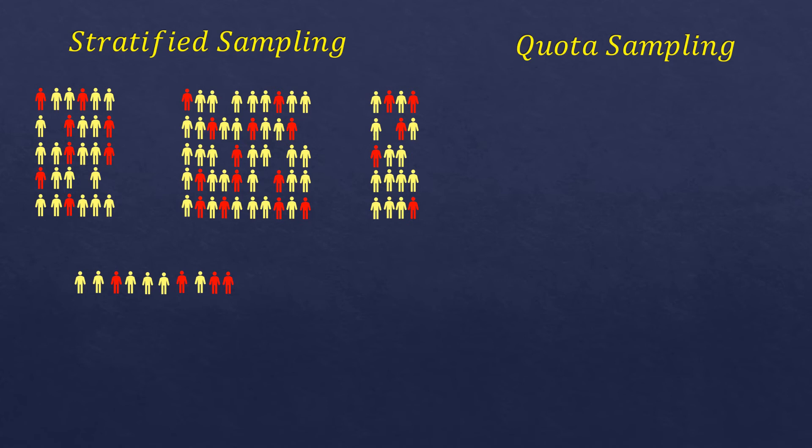In stratified random sampling, the sample size is distributed proportionally from the subgroups — the smaller the subgroup, the fewer samples you select from it. That's the idea of stratified sampling. Now let's move to quota sampling, using the same population of 100.